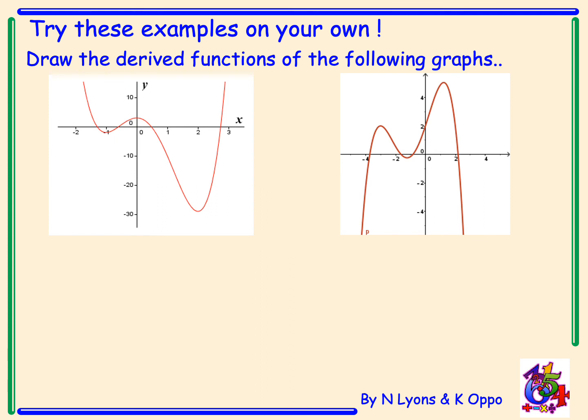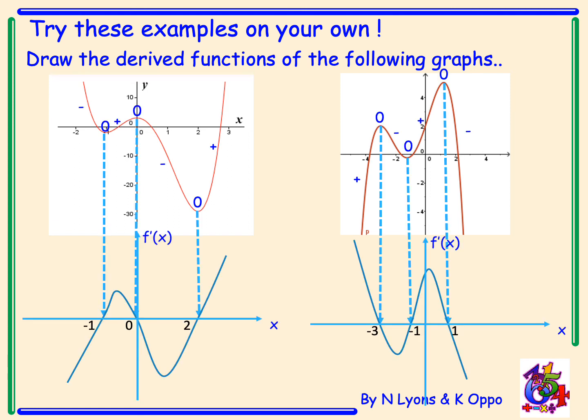Try these examples on your own — draw the derived functions of the following graphs. You can pause, take your time, follow the exact same method, and come back to check your answers. The first example on the left: the gradient was negative, zero, positive, zero, negative, zero, positive — anchor down the turning points as roots of the derived function. That first graph is a quartic, so you get something that looks like a cubic. Same on the right-hand side — a quartic becomes a cubic.